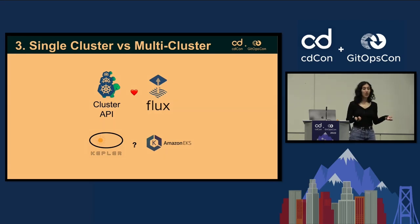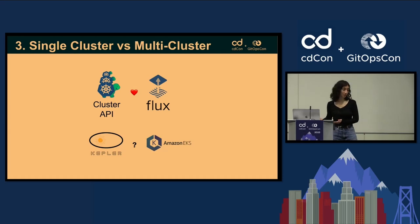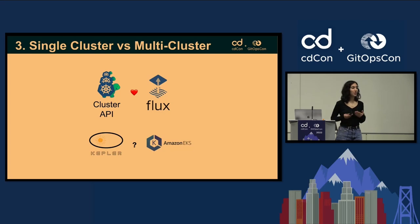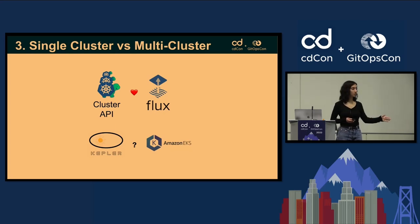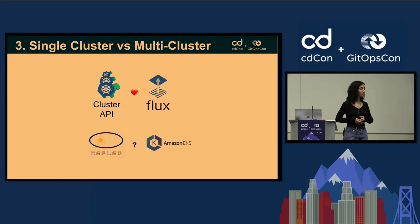So why did we not include Flux in the single cluster versus multi-cluster experiments? Primarily due to time constraints, but also because the equivalent would be to use Cluster API. Cluster API, if this is new to you, is a way to create a management cluster and then create a bunch of workload clusters that copy what is happening in the management cluster — so you can manage a fleet of clusters. It's also very GitOps compatible because you can configure everything with manifests in a Git repo. Cluster API and Flux is a great combination of tools to use together.